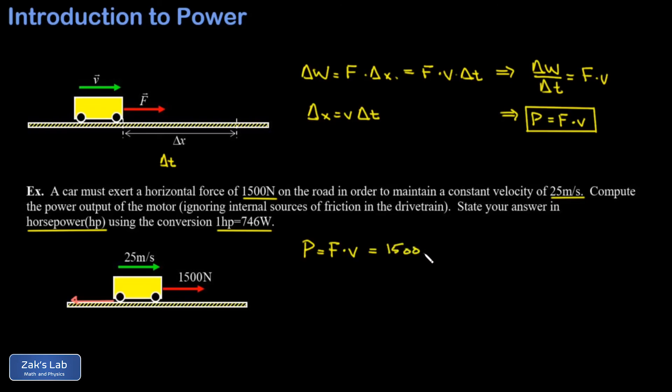The force exerted in order to keep the car moving along at a constant speed is 1500 newtons, and it's moving at 25 meters per second. Notice how the units work out: that's newton-meters per second, but a newton-meter is a joule, so it's joules per second, or watts.